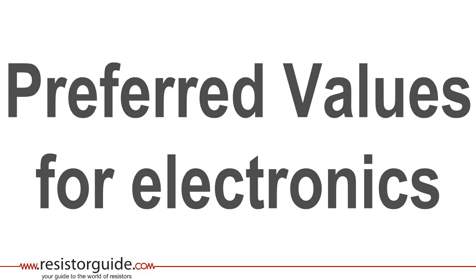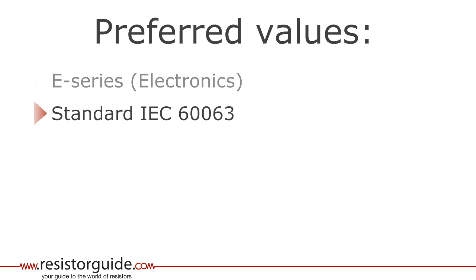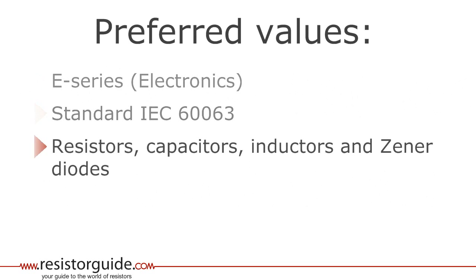In this video you will learn what preferred values for electronics are. In electronics, preferred values are called E-Series. They are defined in the international standard IEC 60063. The E-Series are mainly used for resistors, capacitors, inductors and zener diodes.